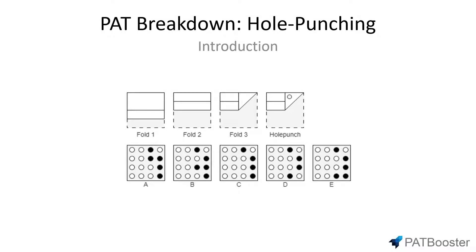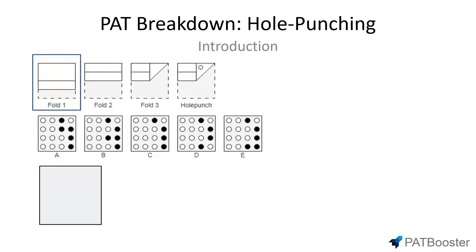Before we go any further, it's a good idea to actually see what a hole punching question looks like, so I put one here for us to quickly talk about. Pretty much the concept is this: they give you a square piece of paper, they perform a few folds on it, then they punch a hole somewhere on the paper. The question becomes: where will all the hole punches be once the paper is unfolded? They give you answer choices with black dots representing hole punches. What we're going to do is first analyze every one of the folds, then work backwards to find out where all the holes will be.